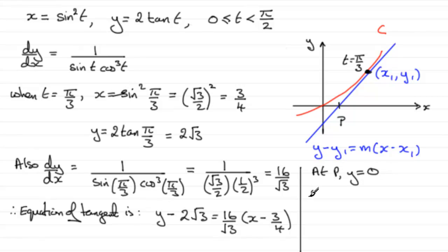So therefore, if we put 0 into here and multiply both sides by √3, we're going to have -2 times √3 times another √3, so that's going to be 2 times 3, which is 6. So we end up with -6 equals, and then expanding the bracket, we'll just have 16 now times the bracket, so it'll be 16x minus, and 16 times 3/4 is going to be 12.